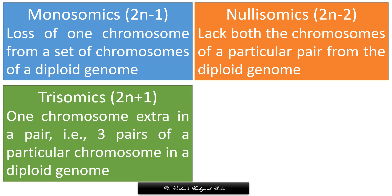Trisomics are abnormal in some characters. For example, Down syndrome in human beings arises due to trisomy of the 21st chromosome. Klinefelter syndrome in man is due to trisomy of the sex chromosome, having 44 plus XXY chromosomes.